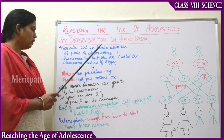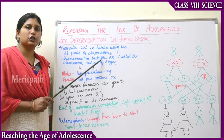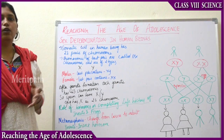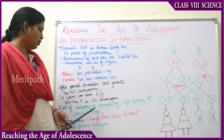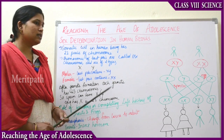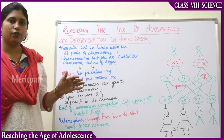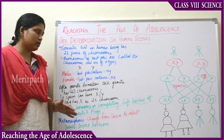That is about sex determination in human beings. Next, let's see about the role of hormones in completing the life history of insects and frogs. You know metamorphosis — we have learned about metamorphosis in the chapter on reproduction in animals. Metamorphosis is the change from the larval stage to the adult stage.